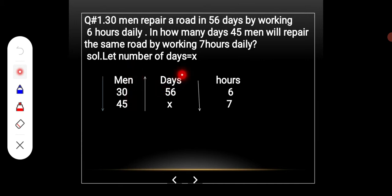Days: 56, and we will find out the unknown days. Here are the things we need to find out and we will write them in place. Hours are 6 to 7.